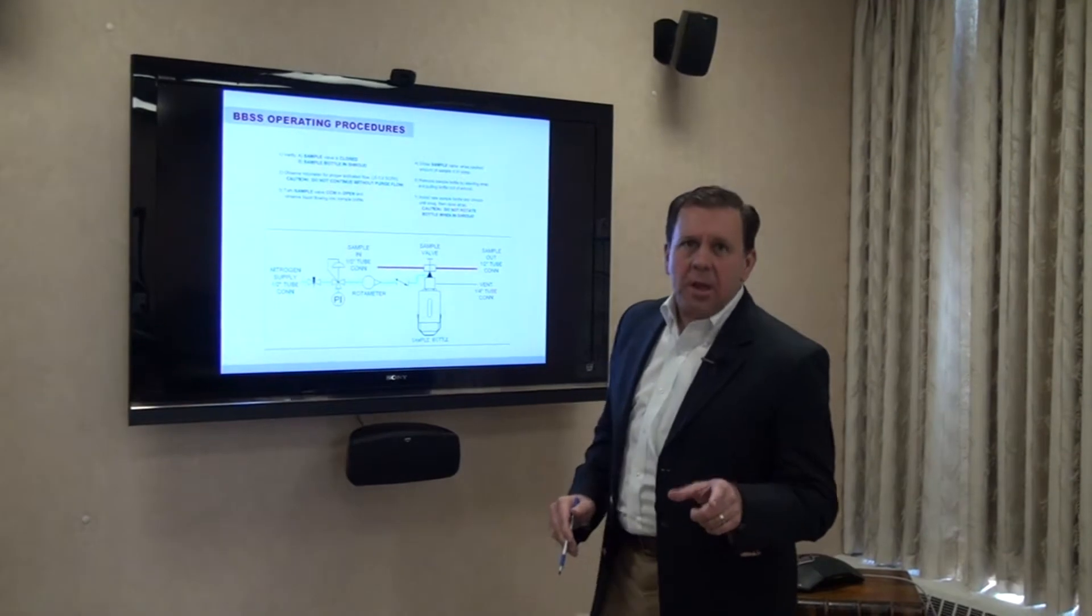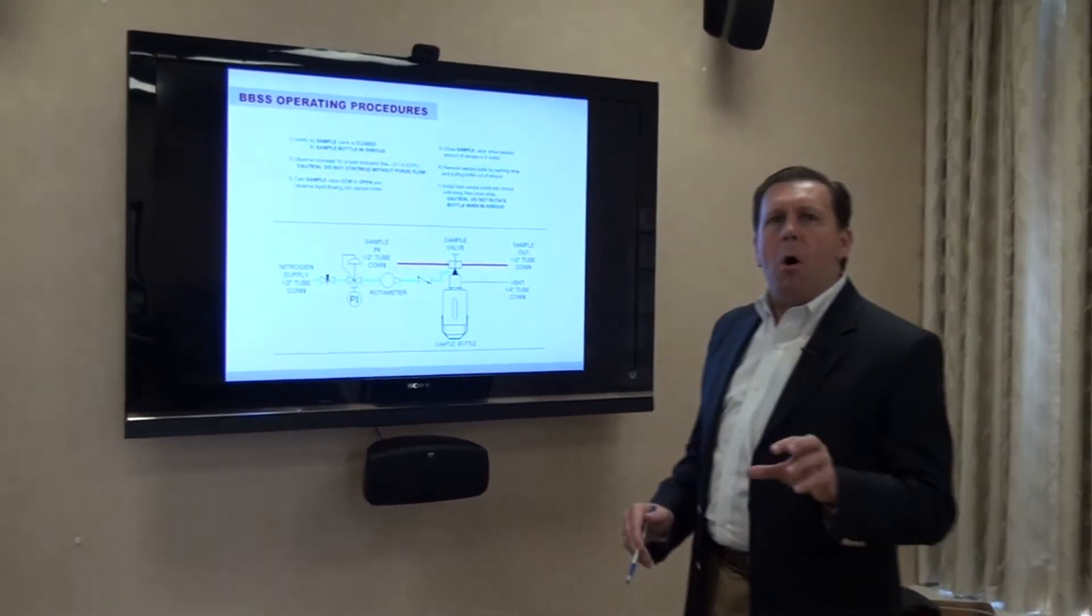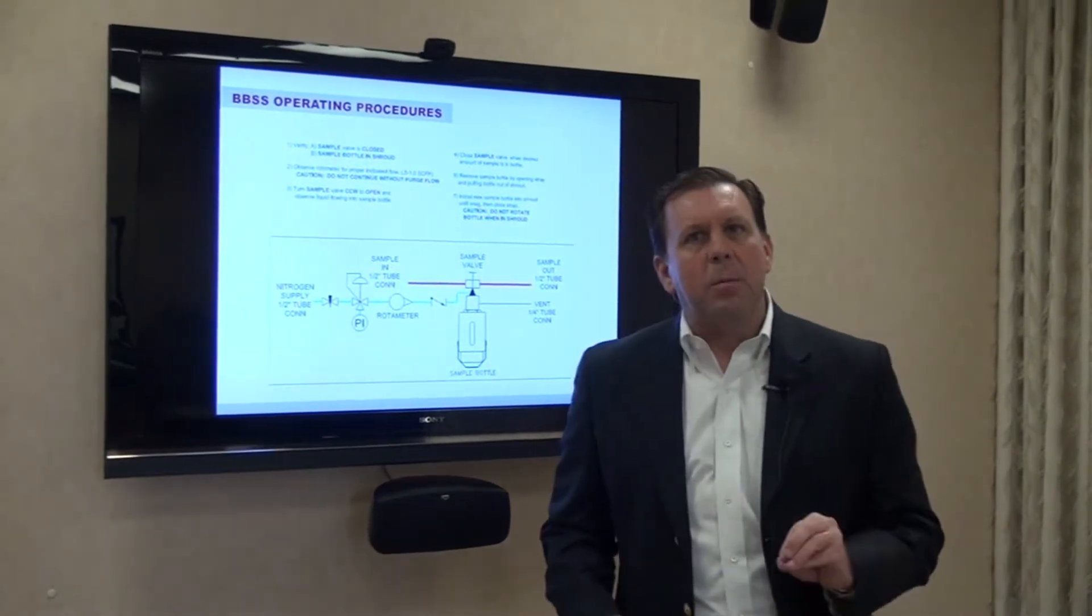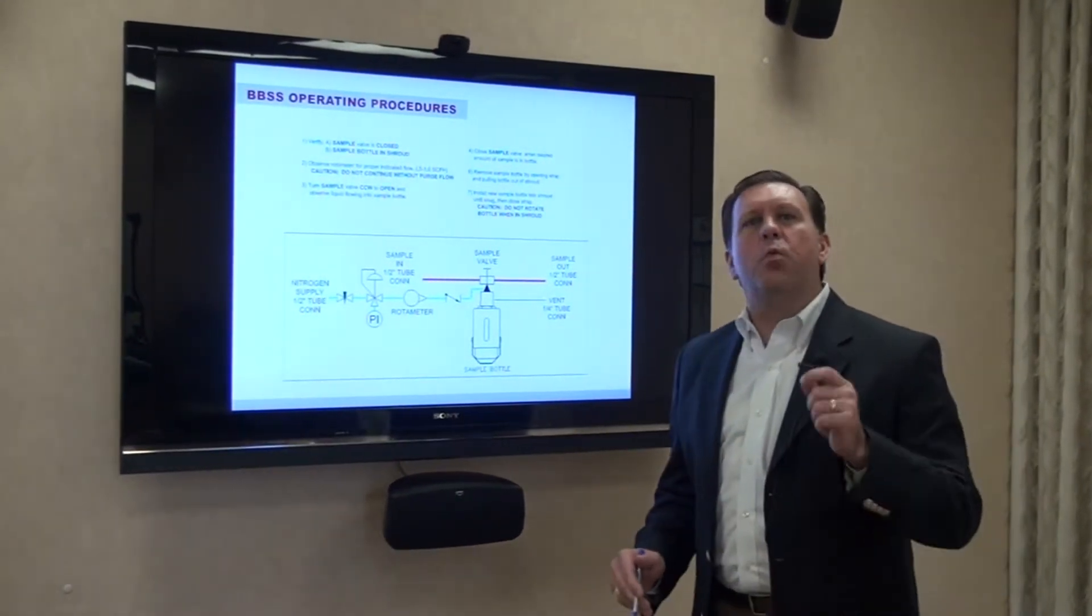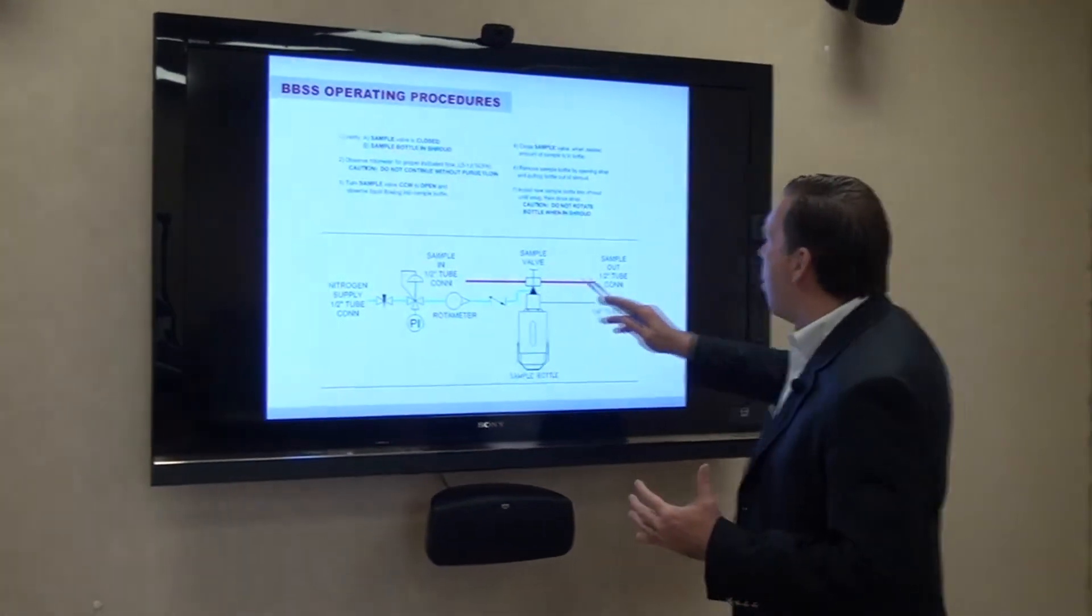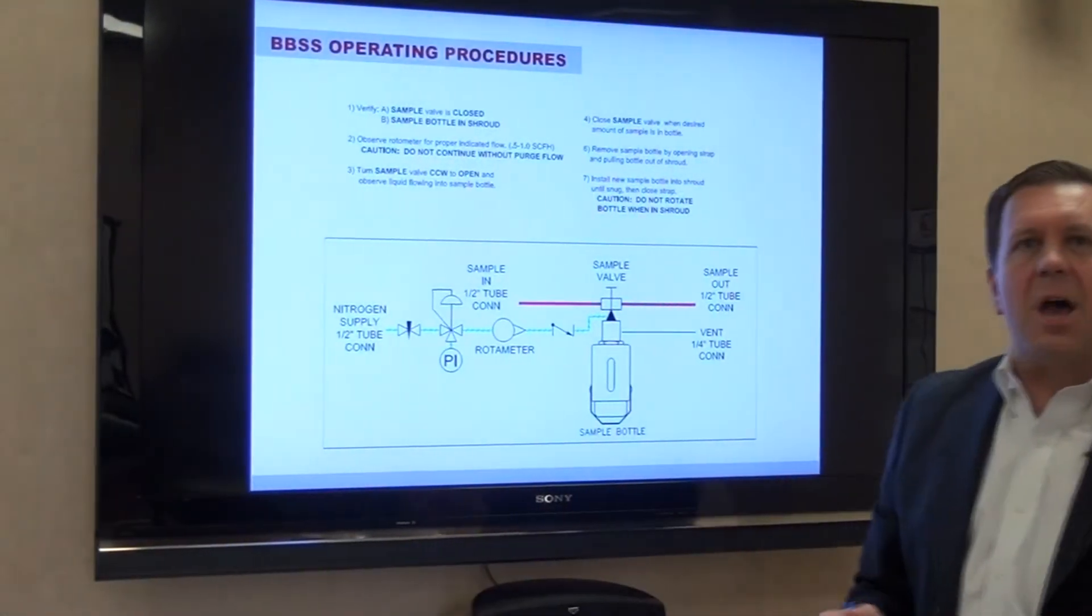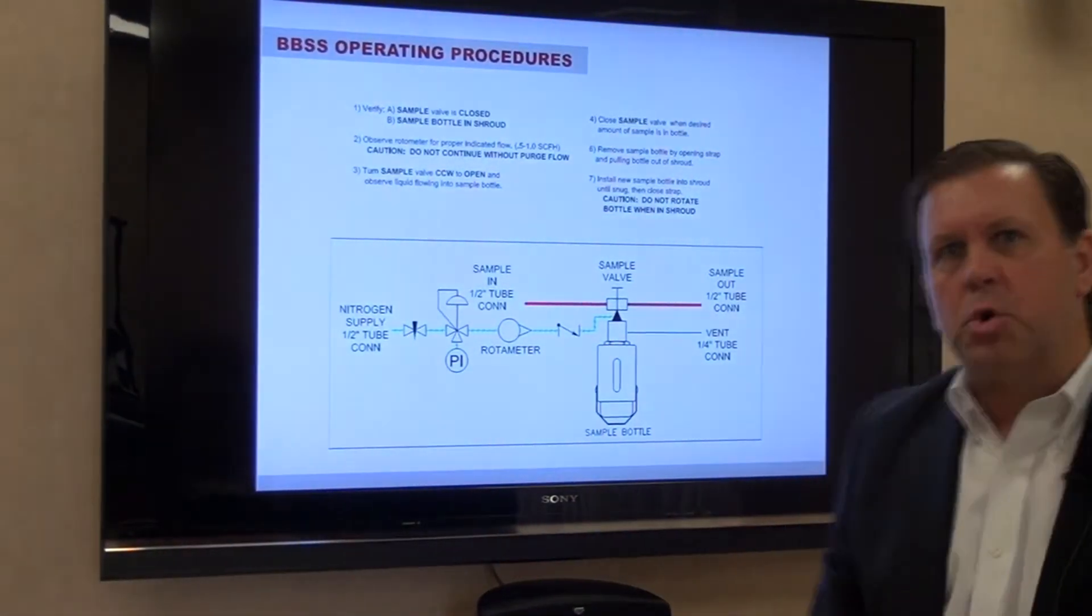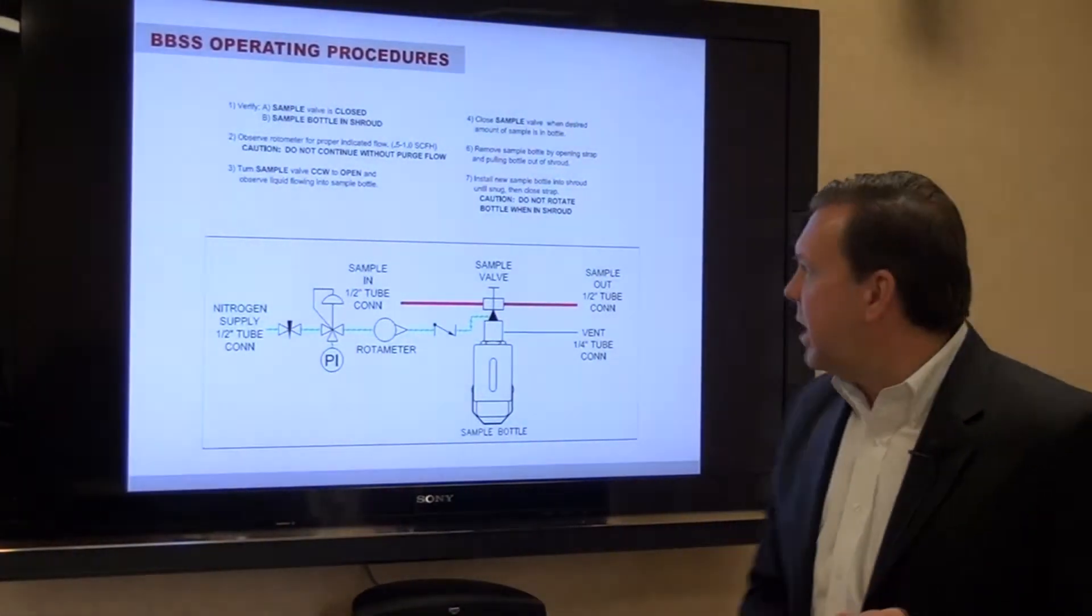Okay, so first let's take a look at the flow diagram for the BBSS. Remember, all of the systems available from Sensor Sampling System are designed to produce a representative sample, and the way we do that is we guarantee we always have flow through the sample valve so at any time there is no dead volume trapped in the system which would contaminate between samples.